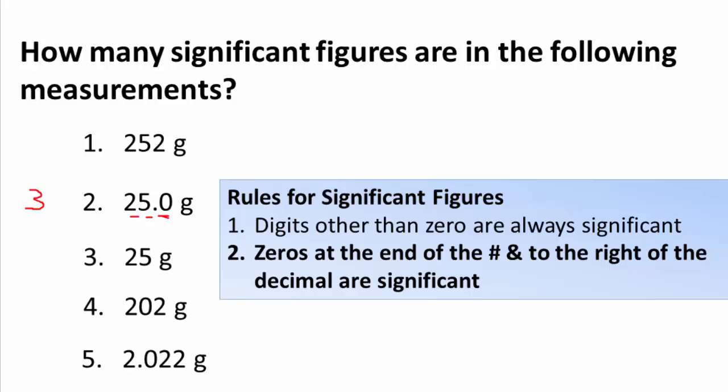Now let's look at 25 — notice this is not 25.0. The 2 and the 5 are both significant, so this number only has two significant figures. When you see a decimal point followed by a zero, that tells us we used a much more precise measuring device in taking that measurement.